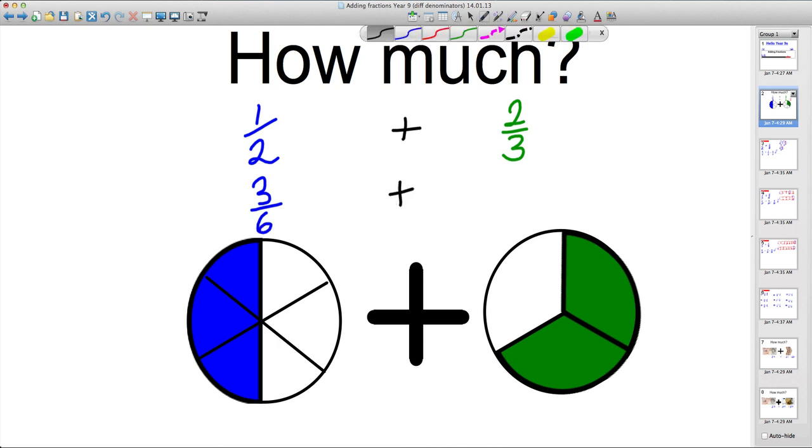Now 2 thirds, let's split that circle into 6 instead. So why don't we line there, line there, line there and then it's split into 6. How many sixths do we have? 1, 2, 3, 4 out of 6. So plus 4 sixths.